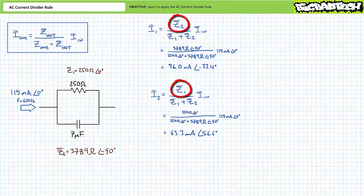Note that only the numerator changes for these different permutations of the AC current divider rule. When solving for I1, Z2 is the impedance not of interest, whereas when solving for I2, Z1 is the impedance not of interest.